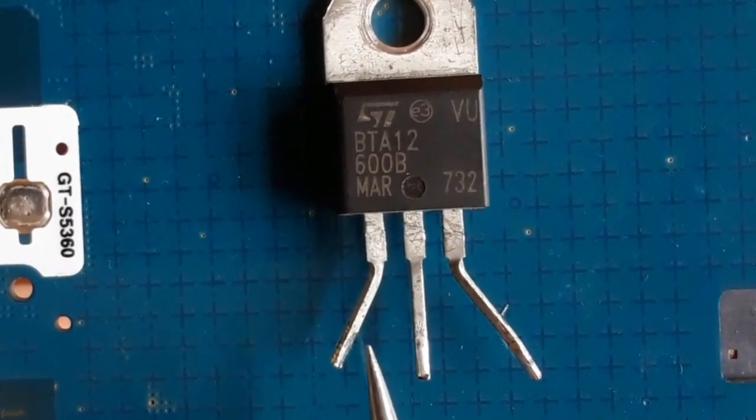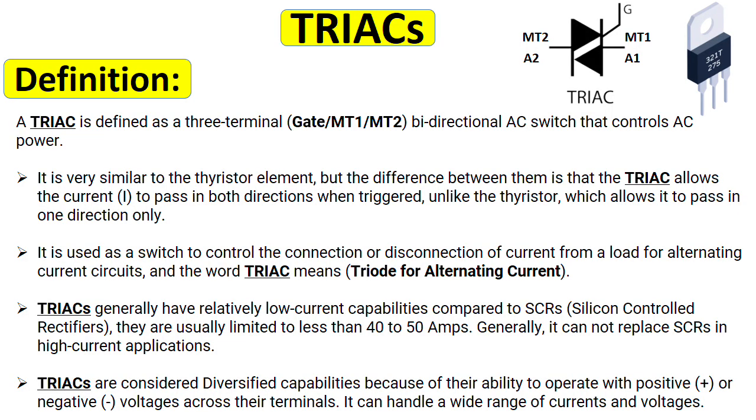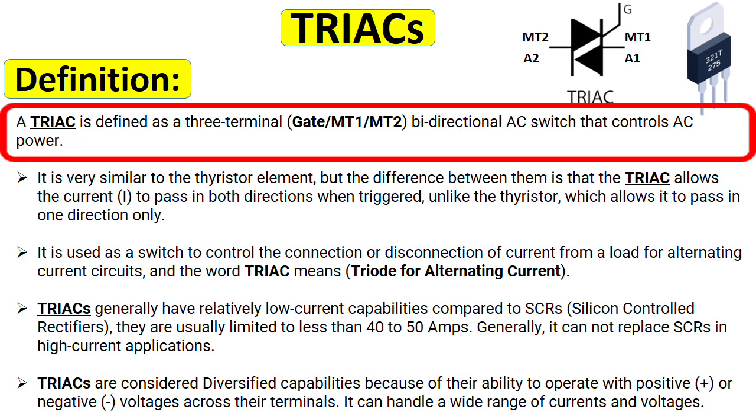First, let's see the definition of TRIACs. A TRIAC is defined as a three-terminal gate MT1, MT2 bi-directional AC switch that controls AC power.